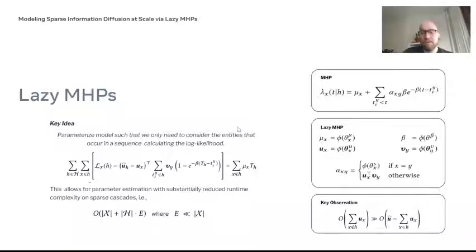We can rewrite the sum over all entities that are not present in an episode as the sum over all entities—which I'm calling U hat here—minus the sum of the entities that occur in the episode. The nice thing is that the second term has a much smaller runtime complexity because we need to compute U hat only once for all event sequences.